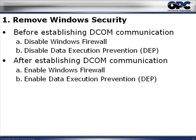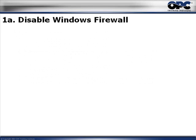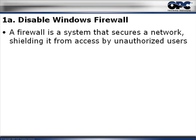Don't forget — after we establish the DCOM communication, after everything is working well between the OPC client and the OPC server PCs, we'll actually re-enable everything. So we'll enable the Windows Firewall and we'll re-enable DEP. So let's talk about disabling the Windows Firewall.